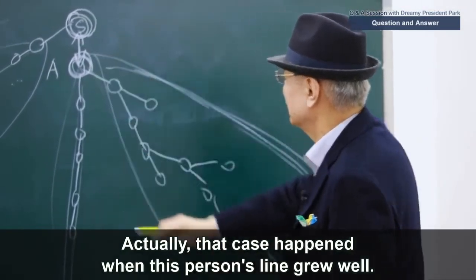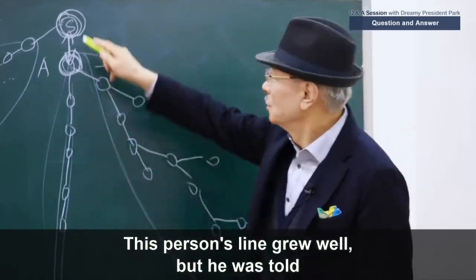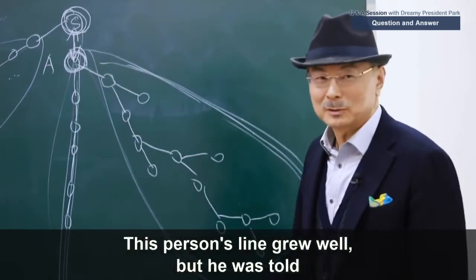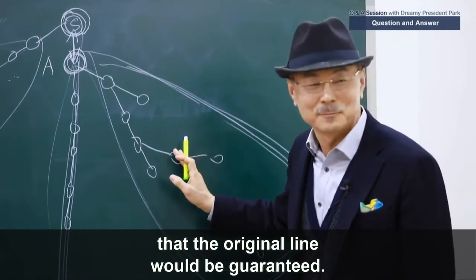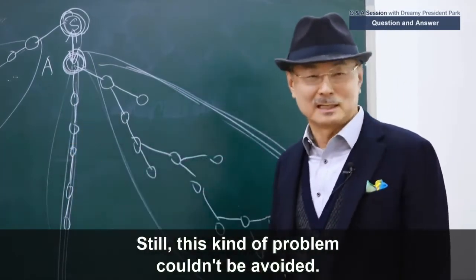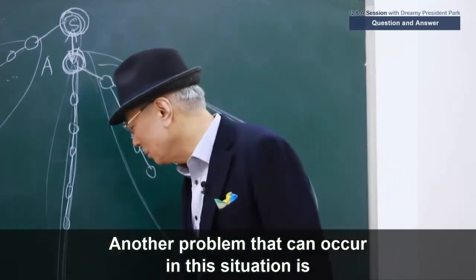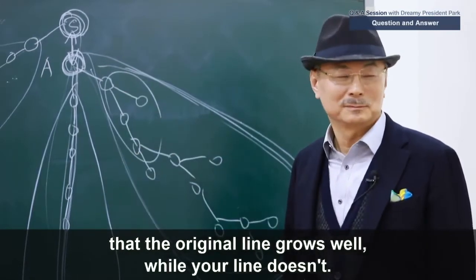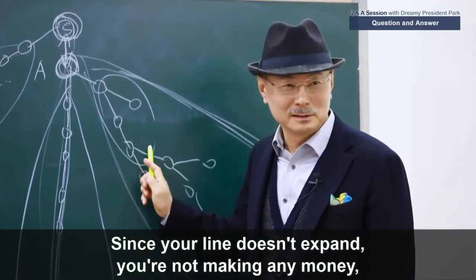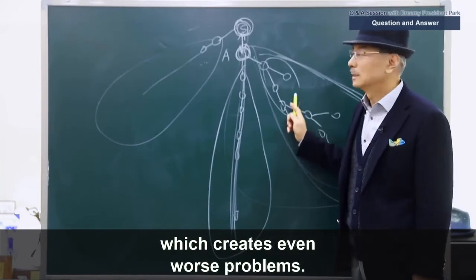Actually, that case happened when this person's line grew well. This person's line grew well, but he was told that the original line would be guaranteed. Still, this kind of problem couldn't be avoided. Another problem that can occur in this situation is that the original line grows well, while your line doesn't. Since your line doesn't expand, you're not making any money, which creates even worse problems.